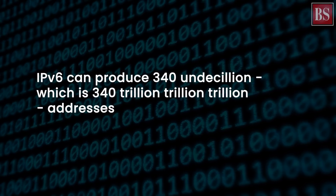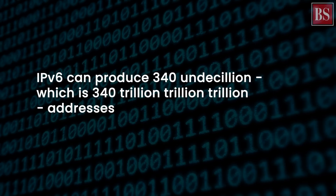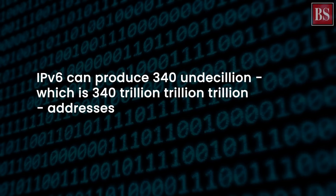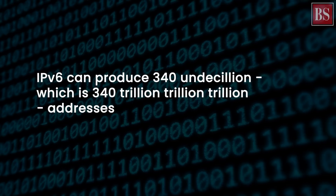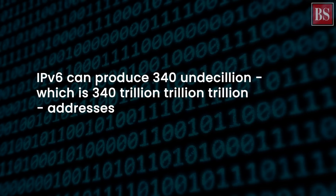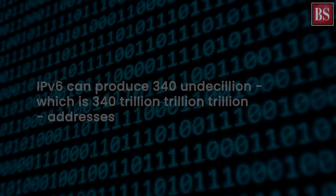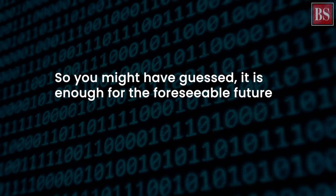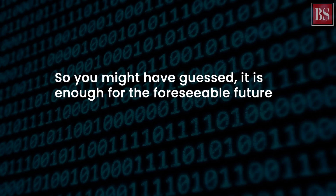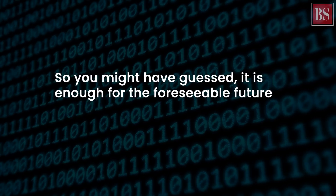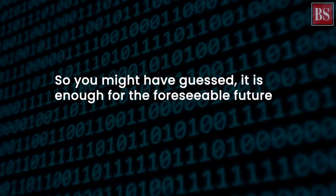Hexadecimal uses both numbers and the alphabet in the address. IPv6 can produce 340 undecillion — that is 340 trillion trillion trillion addresses — so it is enough for the foreseeable future.